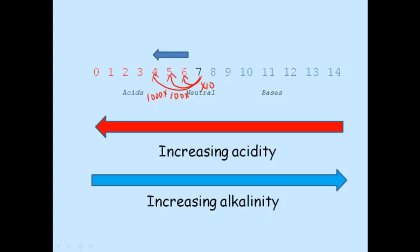Similarly, a rise in pH by one unit increases the alkalinity by a factor of 10. A two-unit rise in pH increases the alkalinity or basicity by a factor of 100, and a three-unit rise increases the alkalinity by a factor of 1,000, and so on.